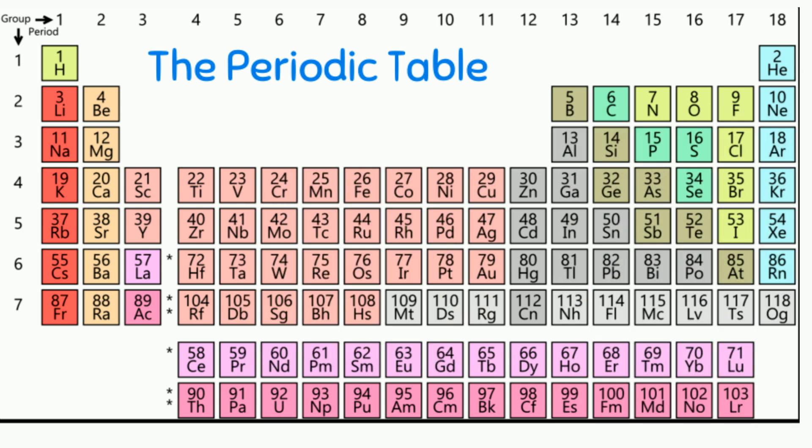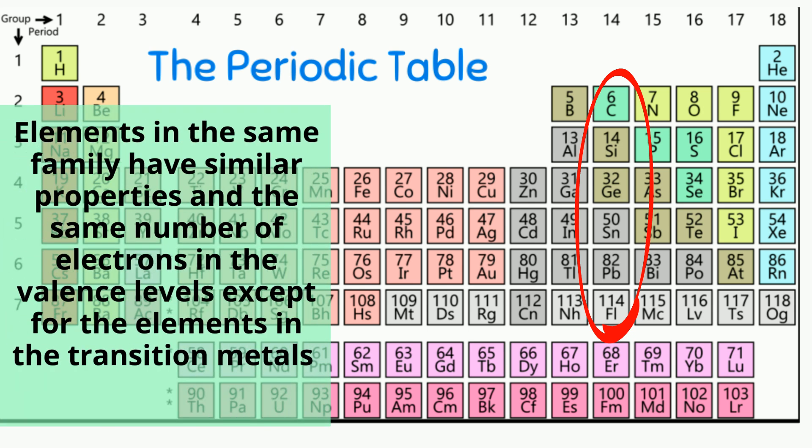And finally you can look and see what column and row it is in. The column will tell you what family it is in and carbon is in the carbon family. Elements in the same family have similar properties and the same number of electrons in the valence levels.